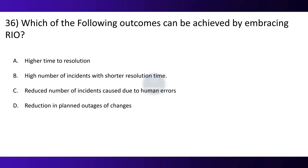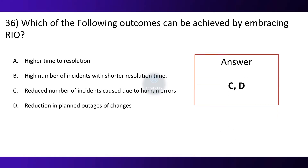Question 36. Which of the following outcomes can be achieved by embracing RIO? Option A: Higher time to resolution. Option B: High number of incidents with shorter resolution time. Option C: Reduced number of incidents caused due to human errors. Option D: Reduction in planned outage of change. The correct option is C and D.